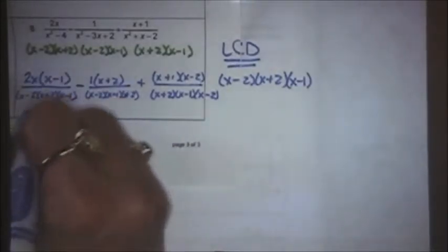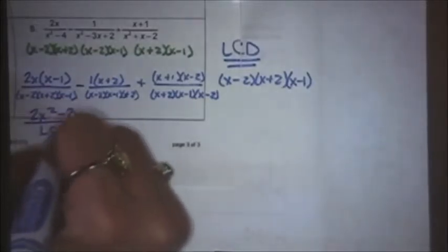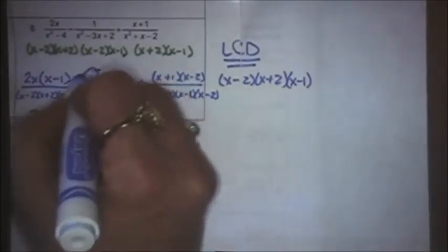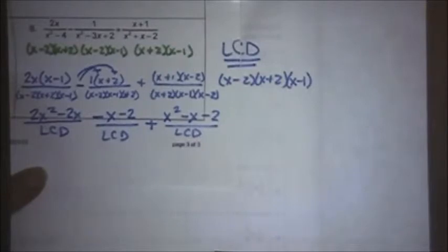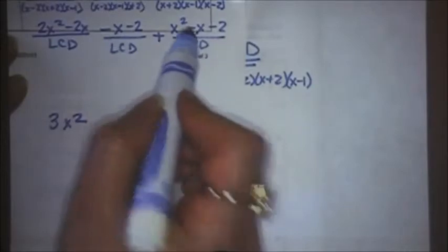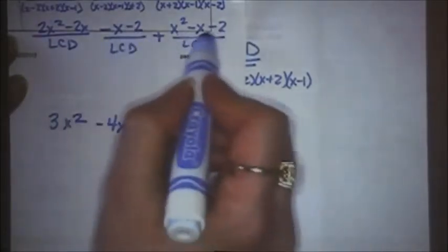Now I'm going to distribute on top. I've got 2x squared minus 2x over the LCD. Minus — I'm going to distribute the negative at the same time I distribute the 1, so it's minus x minus 2 over the LCD. This one has to be FOILed out, giving x squared minus x minus 2 over the LCD. Now we can combine like terms: 2x squared plus x squared is 3x squared; negative 2x minus x minus another x is minus 4x; minus 2 minus 2 is minus 4. All over x minus 2, x plus 2, x minus 1.